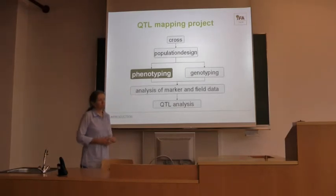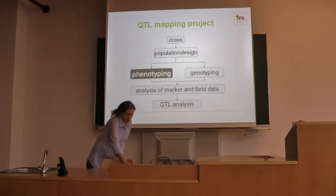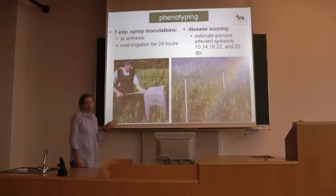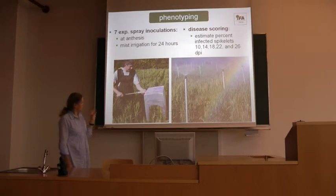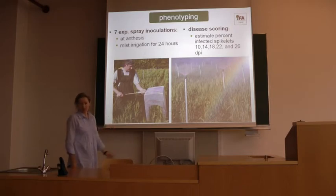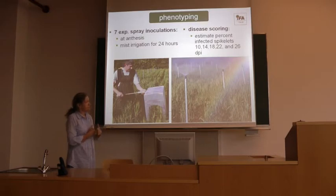To start phenotyping, we did this over several years in the field. We spray-inoculate the plants with Fusarium inocula when they are flowering and keep those plants wet to achieve good infection. Our scoring starts ten days after inoculation and is repeated five times every four days. We estimate the percent of infected spikelets per plot.